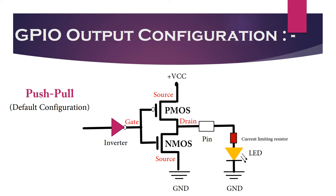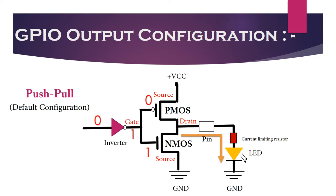And to turn off the LED, we can write 0, which will turn off the PMOS transistor and turn on the NMOS. As a result, the LED will be pulled to ground. I hope push-pull configuration is now clear and how to operate an LED in this configuration.